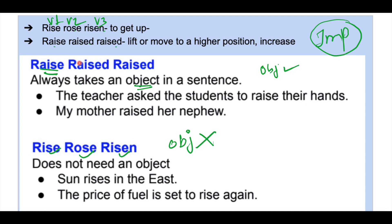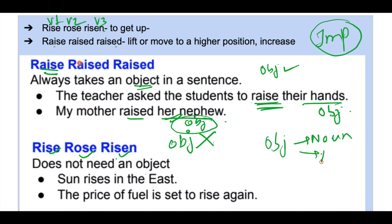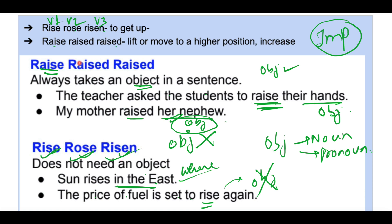For example: 'The teacher asked the students to raise their hands' — here 'their hands' is the object. 'My mother raised her nephew,' meaning she parented her nephew — 'nephew' is the object. But for rise: 'Sun rises in the east' — there is no object here; 'in the east' is an adverb. Similarly, 'The price of fuel is set to rise again' — no object is present.